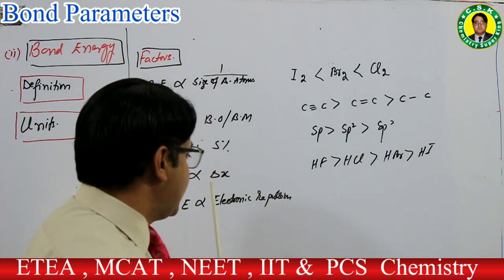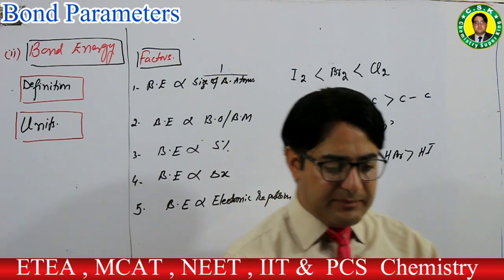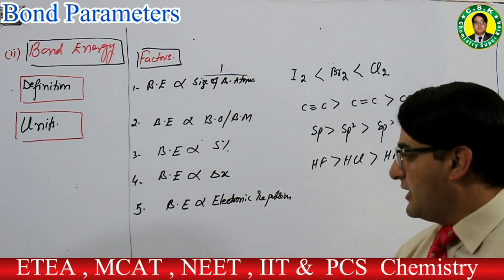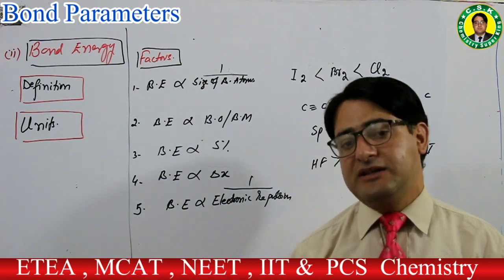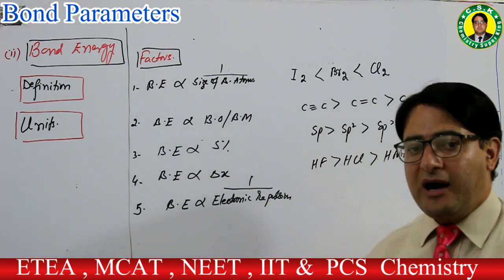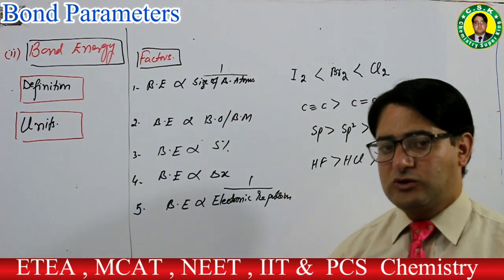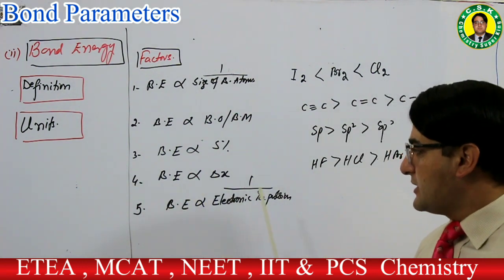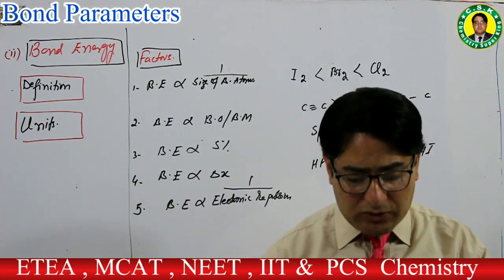Electronic repulsion اور bond energy کا inverse relation ہے — electronic repulsion زیادہ ہوگی تو bond length زیادہ ہوگی، bond length زیادہ ہونے سے bond weak ہوتا ہے، اسے break کرنا آسان ہوتا ہے۔ Bond energy اور electronic repulsion کا inverse relation ہے۔